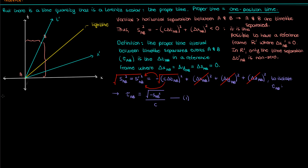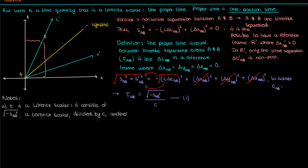The first thing to note about proper time is that it's a Lorentz scalar, which is exactly what we want. It consists of two quantities: the spacetime interval, which is a Lorentz scalar, and the speed of light c. By the second postulate of special relativity, the speed of light in vacuum is the same in all inertial reference frames, so c is also a Lorentz scalar. Since proper time is one scalar divided by another, it is itself a Lorentz scalar.